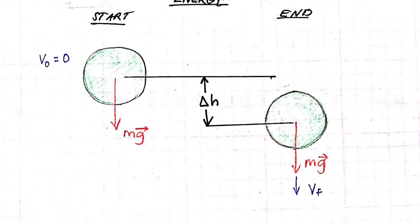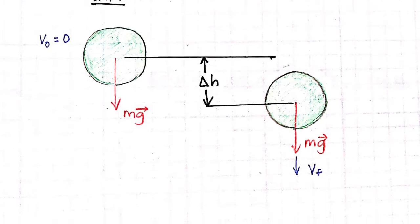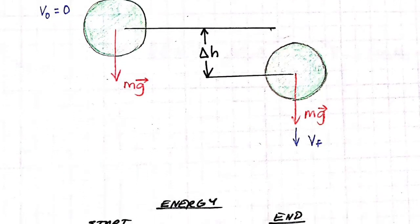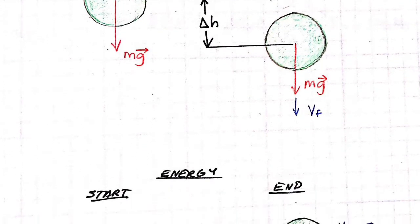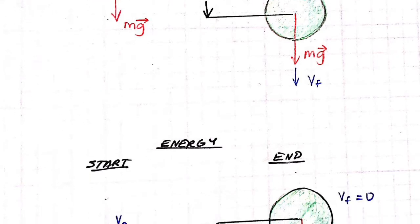This first diagram shows the tennis ball being released from rest at the start and having a final velocity hitting the ground with a change in height. This final velocity is the initial velocity of the ball's rebound.